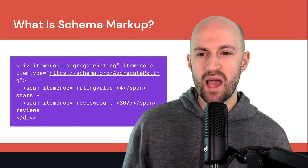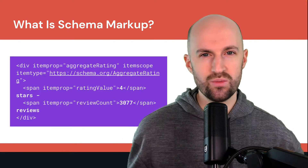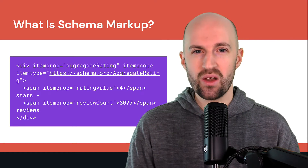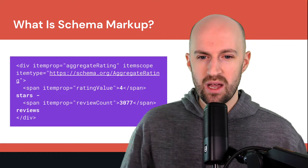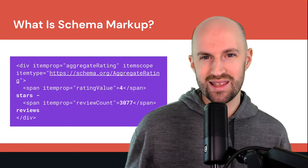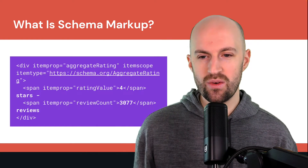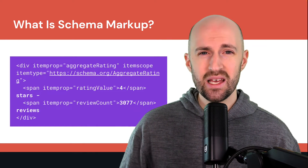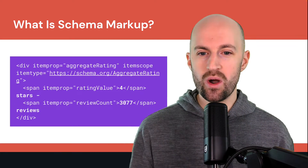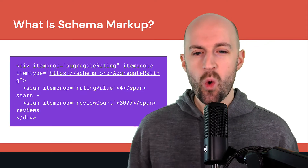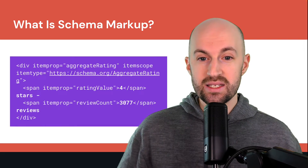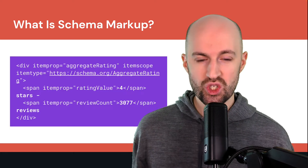I want to show you how the code actually looks — don't worry if you don't know anything about HTML, I just want to give you an example. So here you have an aggregate rating. On a website, you might have four stars, and then underneath it says 3,077 ratings or reviews. This schema.org basically tells the search engines what this information is — so what is four? It's the number of stars. What is 3,077? It's the number of reviews. And all of this is the aggregate rating for this website or service.